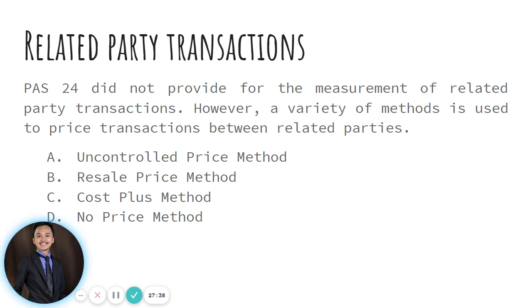Those are the pricing policies that an entity may use for a related party. Again, that's it for our short discussion on related parties. It reminds us that regardless of whether a person or entity is related to a particular corporation, whatever transactions they may have, whether including charges or not, such should be properly disclosed. Since they are related parties, there could possibly be conflicting interests, and thus it is required to be disclosed and be informed to the users of the financial statements and other stakeholders.